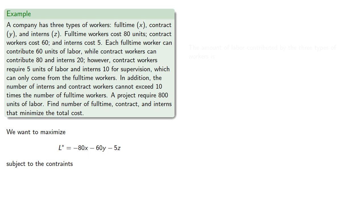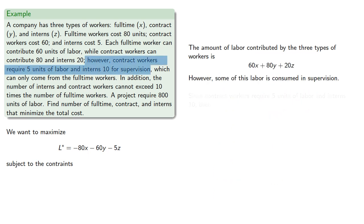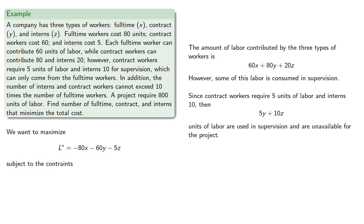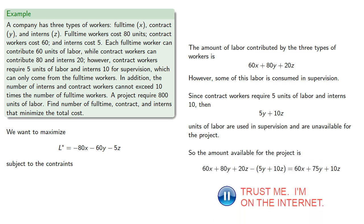Now, the amount of labor contributed by the three types of workers... However, some of this labor is consumed in supervision. Since contract workers require 5 units of labor and interns 10, then 5y plus 10z units of labor are used in supervision and are unavailable for the project. So the amount actually available for the project is... And we need at least 800 units, so this amount is greater than or equal to 800.